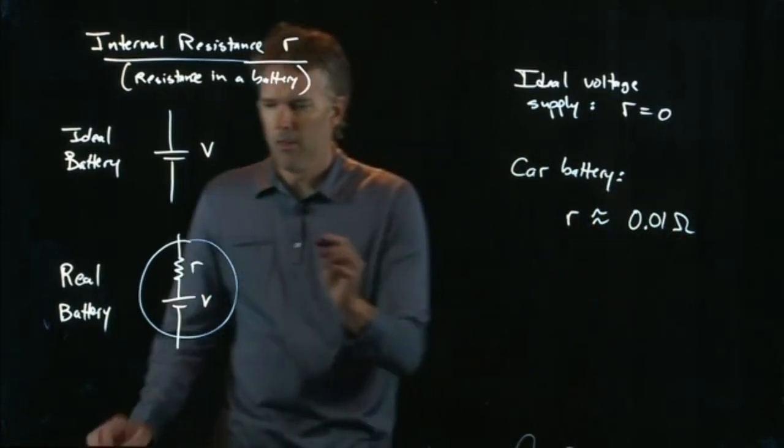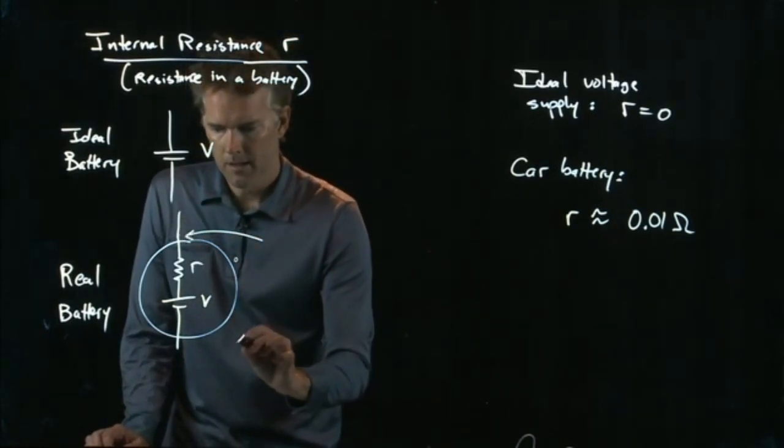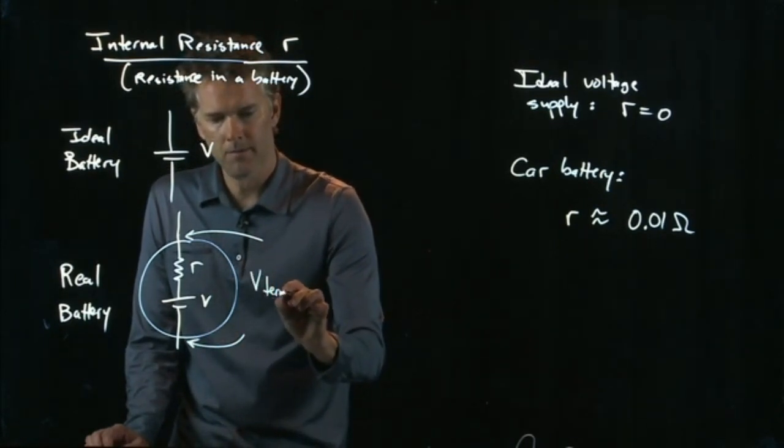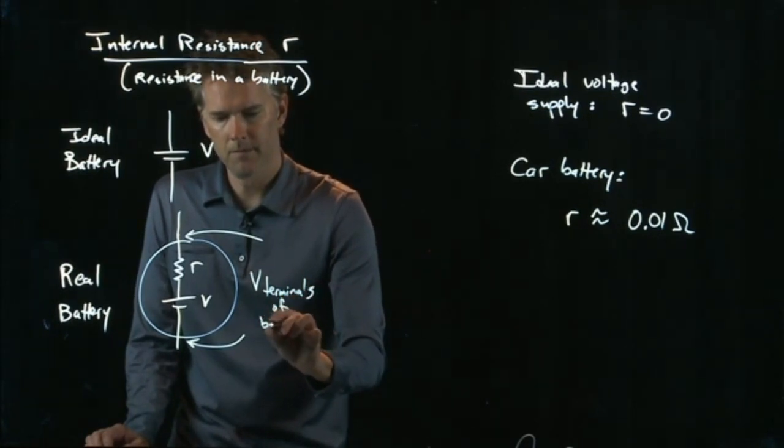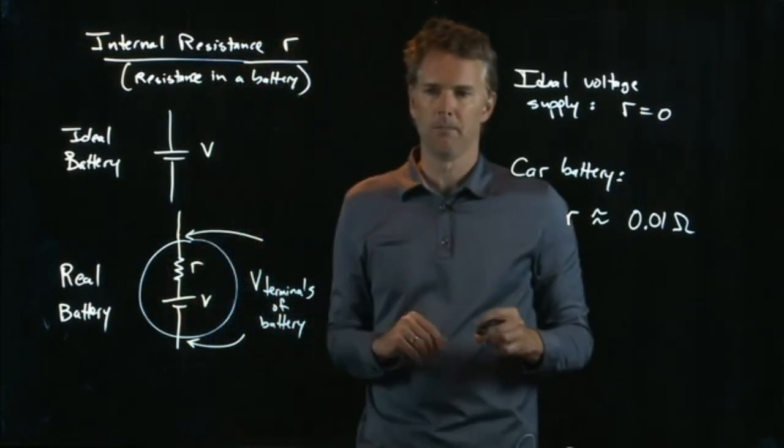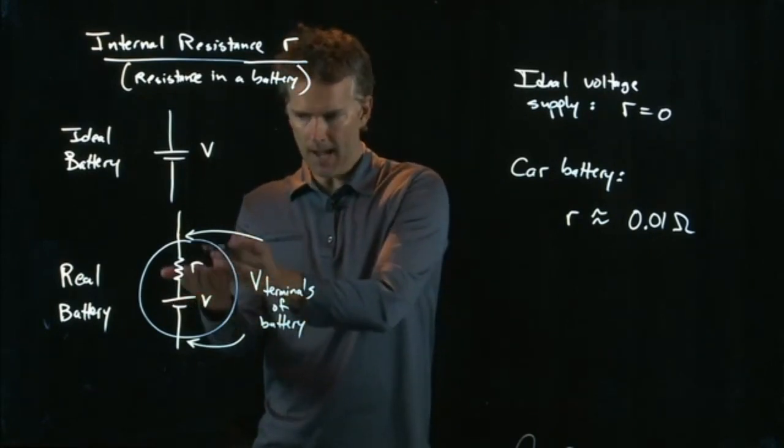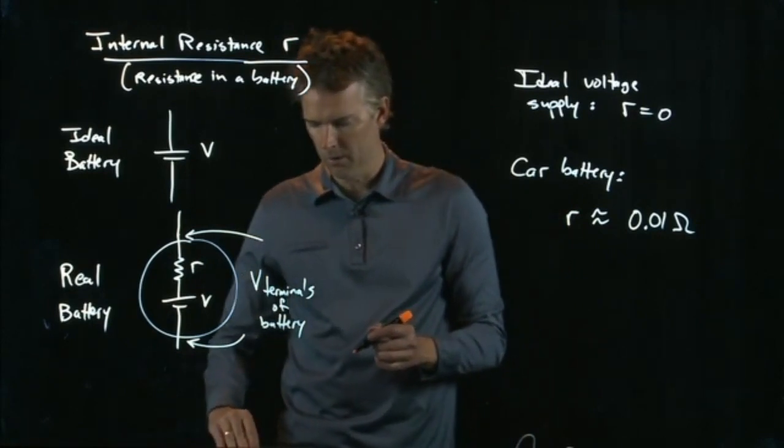Now, V of the battery is what's coming out here. What's coming out of the circuit, out of this circular region, is what you actually measure coming out of the battery. It's not only a voltage supply, it's a little internal resistance. And we call that the terminal voltage.